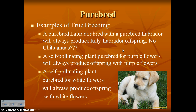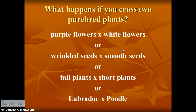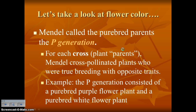This is all under number three in your organizer. Mendel's question was: what if he took those purebred plants and crossed them with one another? That's called cross-pollination. He crossed purebred purple flower pea plants with purebred white flower pea plants. Those parent plants are called the P generation — P stands for parental. For each cross, Mendel used true-breeding plants with opposite traits.